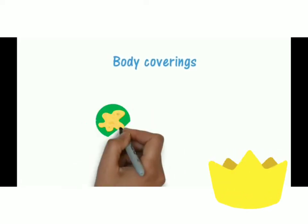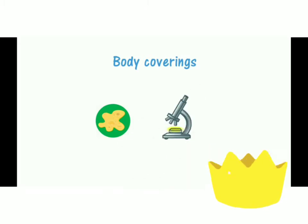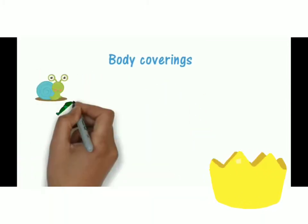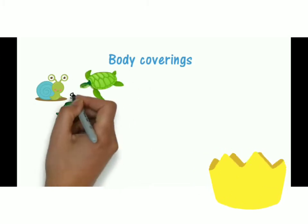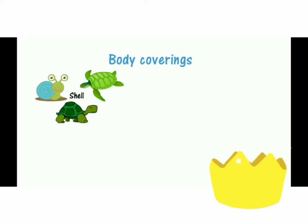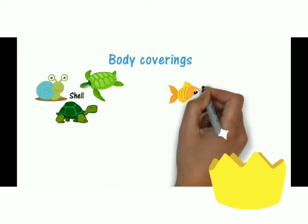Now we will discuss about body coverings, which protect the animal and help them to adapt and live comfortably in their habitat. You can see this small animal — this is an amoeba, which can be seen by microscope only. Different animals have different body coverings. The first is a shell, which is a very hard outer covering that protects the soft bodies of animals like snails, tortoise and oyster.